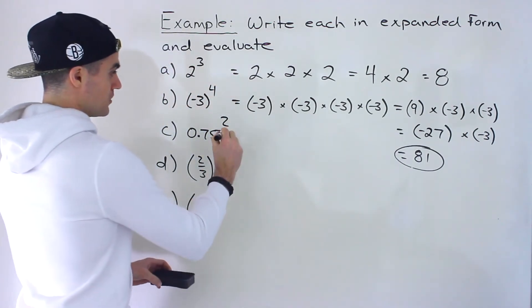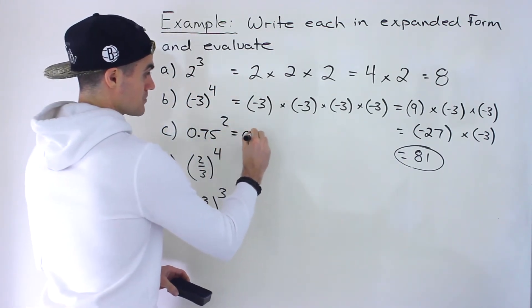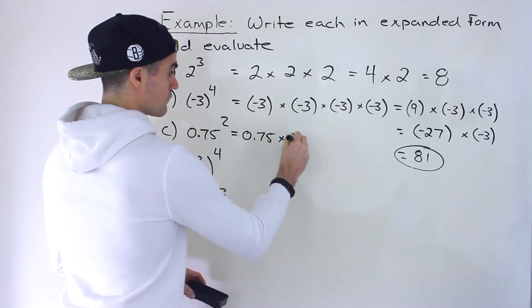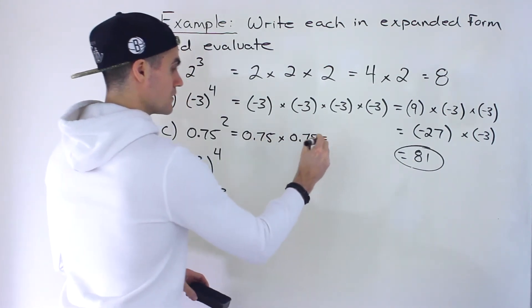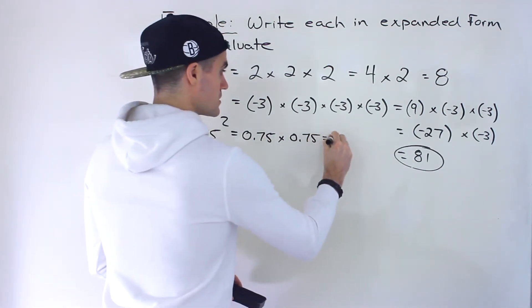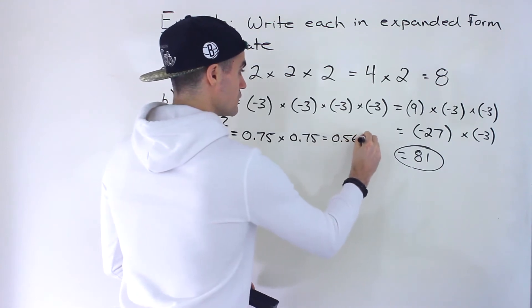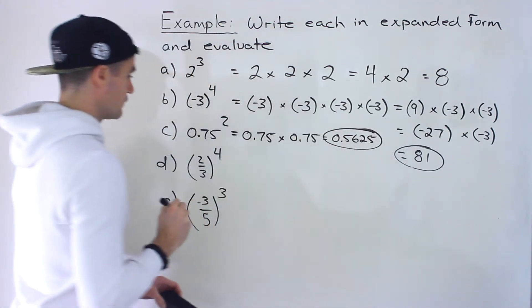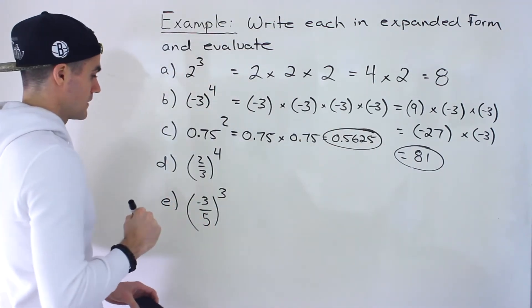Moving on to part c — we have a decimal. We have 0.75 to the power of 2. That would just be 0.75 times 0.75, which gives us 0.5625. That's the final answer for part c.